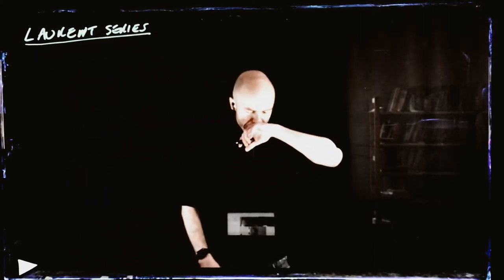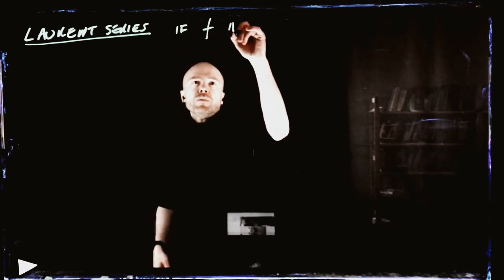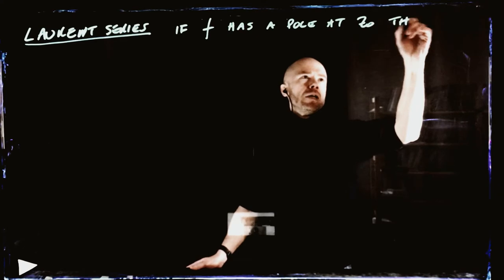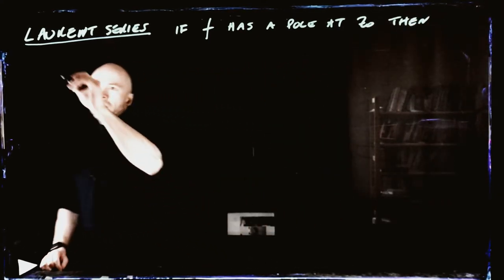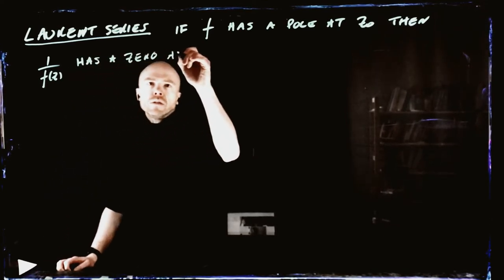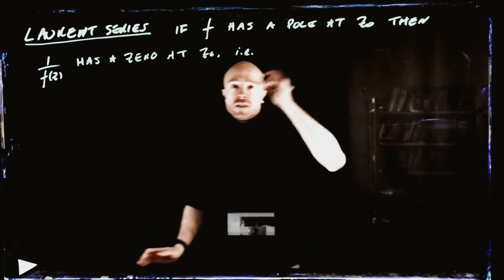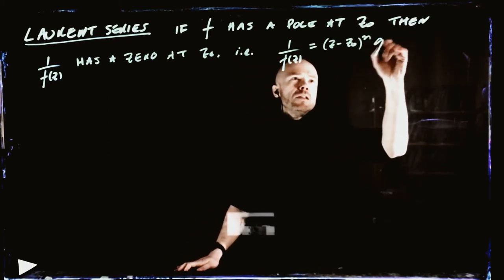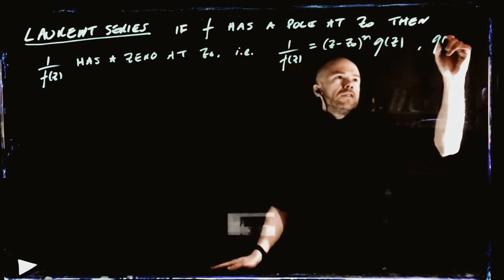Today we're going to talk about Laurent series. So what do we know about singularity? If f has a pole at z₀, then that exactly means we define it to be this: that 1 over f of z has a zero at z₀, i.e., 1 over f(z) equals (z minus z₀)^n times some holomorphic function g, where g(z₀) is not equal to 0.